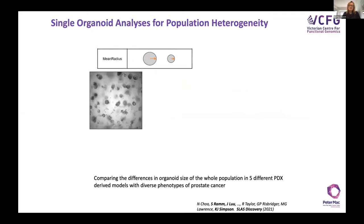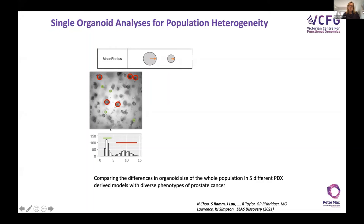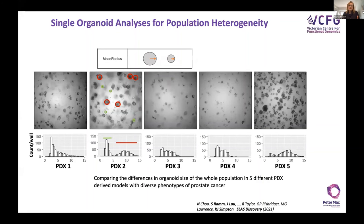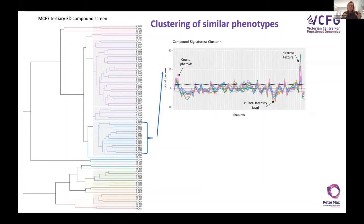We've also been spending a lot of time thinking about cancer heterogeneity — we can measure the radius of structures. Using a prostate cancer PDX line, you've got different size structures that respond to drugs differently. It's critical that we can measure and define them, creating histograms to look at the proportion of structures in each size bracket. All five prostate lines look completely different — apples versus oranges — but if we can say we've got this proportion of large versus small, we can start to tackle that heterogeneity problem.